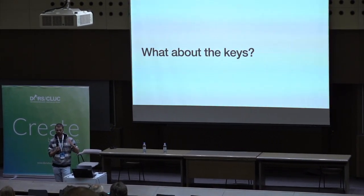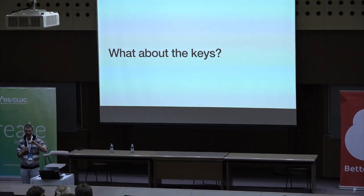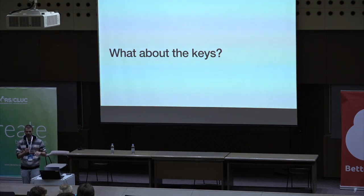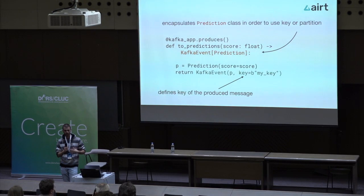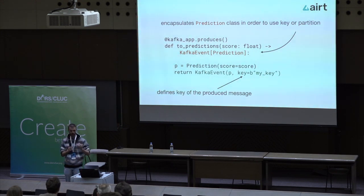What about keys? Kafka is based upon partitioning of topics — that's why you can get a lot of parallelization inside your applications. But if you have a customer's history, you want the consumer on one partition to always consume data for the same customer, not scattered across different partitions. Kafka solves this with keys: the key decides which partition the data is produced to. To produce with keys in Fast Kafka, instead of returning just your prediction, you wrap it inside a KafkaEvent object. Fast Kafka recognizes this, unwraps it, and produces your prediction using the key, giving you complete control over partitioning.